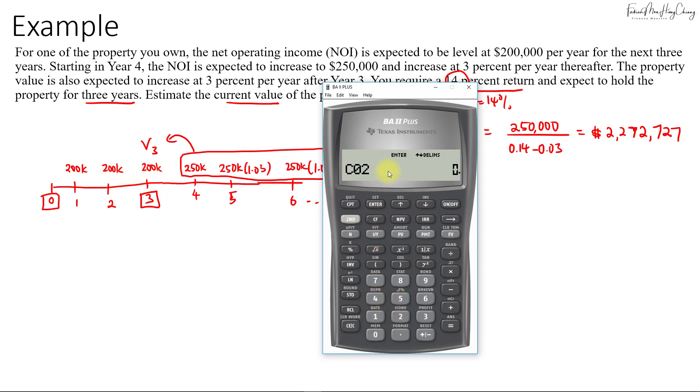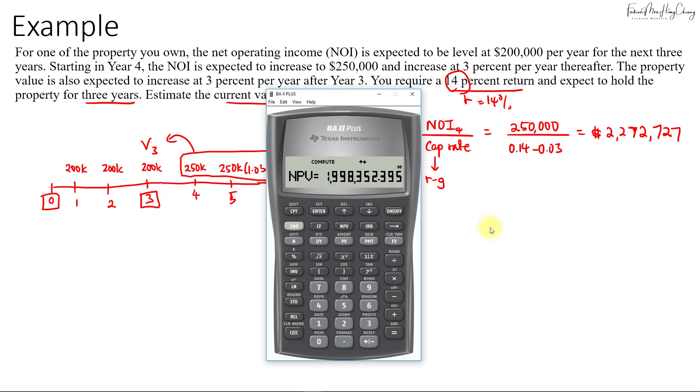For C03, which I put in CO2 here, there will be $200,000 plus the terminal value, which is $2,272,727. We have all the cash flows now: $200,000 for two years, then $2.4547 million. NPV—press I equals to 14, then go down and compute NPV. This is the value of your property.